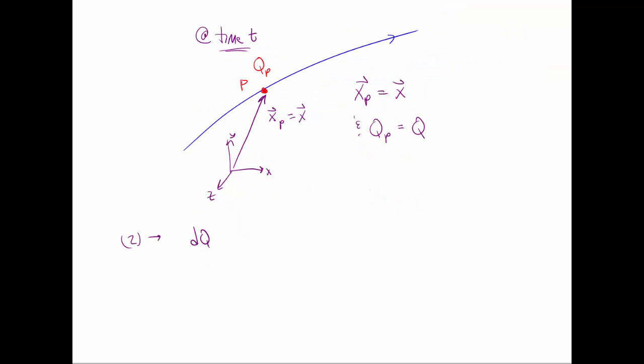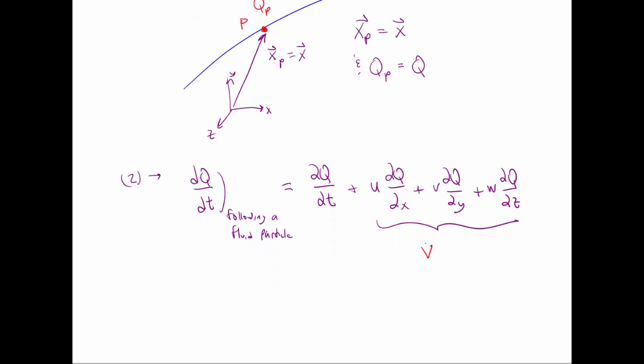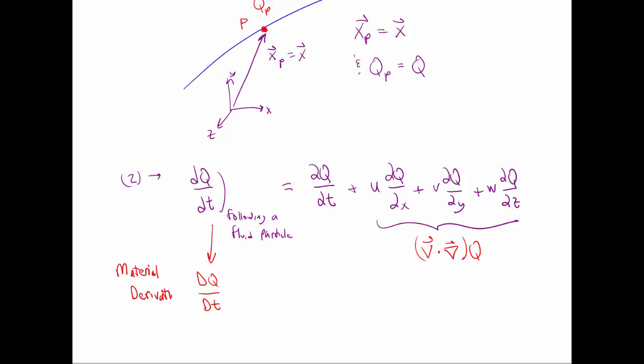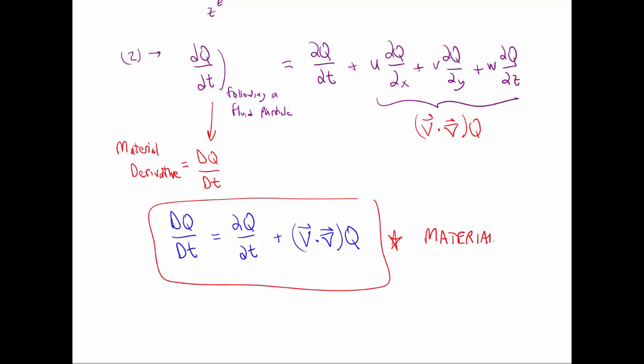So equation two becomes dq dt, and we're going to say this is following a fluid particle, is equal to del q del t plus u del q del x plus v del q del y plus w del q del z. We recognize this as v dot del operating on q. We also like to give this special notation. We'll use capital D. So capital D q d t instead of little d just to emphasize that this is following a fluid particle. And this is what we call the material derivative. So finally we can write the following. And this is our definition of material derivative.